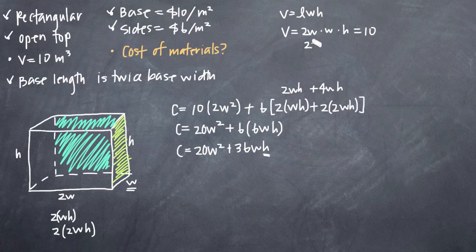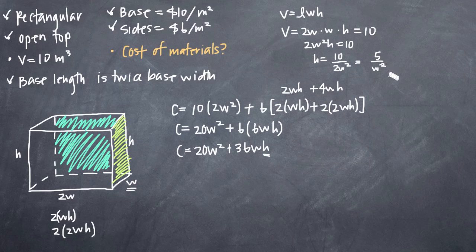So you'll see that we get 2w squared h is equal to 10. We can divide through by 2w squared to get h by itself and we'll get h equals 10 over 2w squared. Of course we can divide both numerator and denominator by 2 and simplify to 5 over w squared.